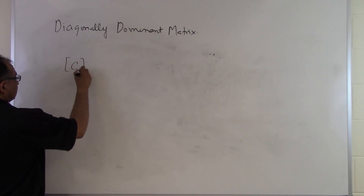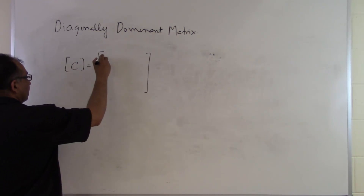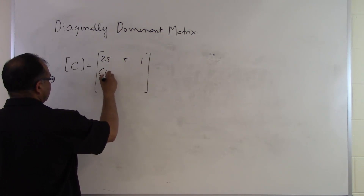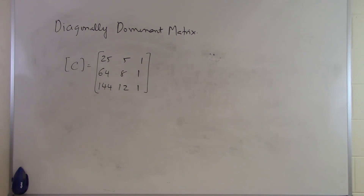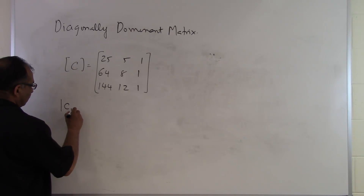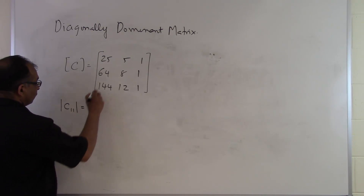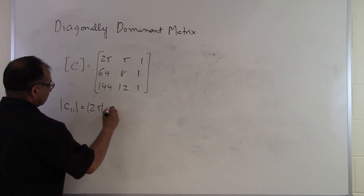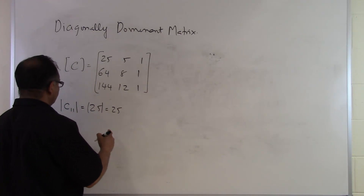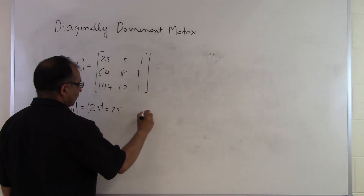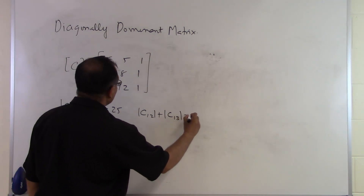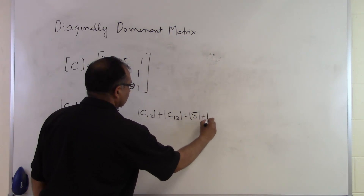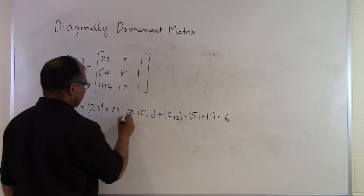Let's look at a second matrix C: row 1 is 25, 5, 1; row 2 is 64, 8, 1; row 3 is 144, 12, 1. For i = 1, |C_11| = 25, and |C_12| + |C_13| = |5| + |1| = 6. Since 25 ≥ 6, that is satisfied.